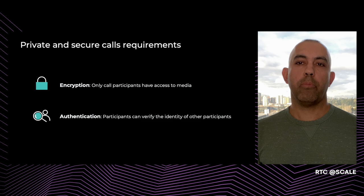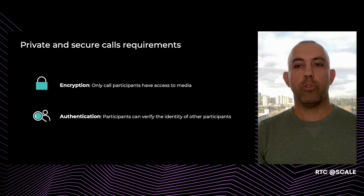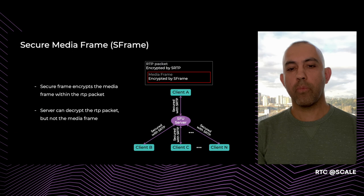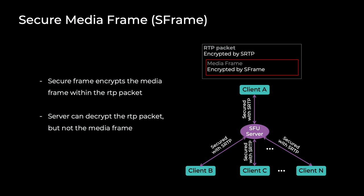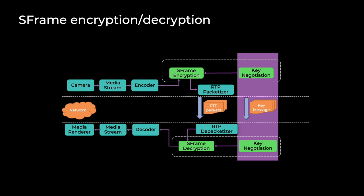There are two main requirements for private and secure calls. One is encryption, which guarantees that the media is only accessible by the participants of the call. The other is authentication, which provides a way for participants to verify each other's identity. One approach to make group calls end-to-end encrypted is based on Secure Media Frame, or S-Frame. S-Frame is an end-to-end encryption mechanism for real-time content, independent of the underlying transport. In this approach, the media frame within the RTP packet is encrypted by S-Frame, and the server does not have access to decrypt this media frame.